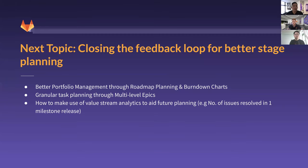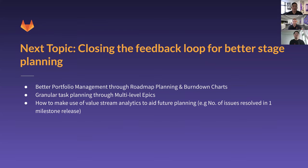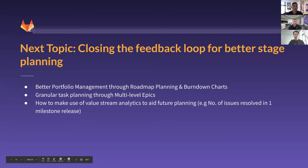This brings us to the end of the webinar. Keep an eye out for the next topic — we'll be talking about closing the feedback loop for better stage planning, which covers portfolio management through roadmap planning and burndown charts, granular planning through multi-level epics, and how to make use of value stream analytics. Thanks everyone for tuning in — we hope you got a lot out of it. We'll drop a survey link in the chat — please fill it out to let us know what we're doing right, what we're doing wrong, and what you'd like to see in future webinars. The webinar is being recorded and we'll send you a copy afterwards.